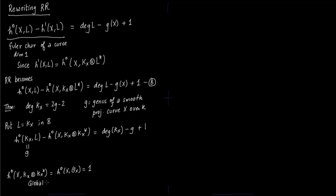Since the entire global section on O is just the constant. Degree of numerator is equal to degree of denominator. You do not have any non-constant functions. And the only thing possible here is the constant. And the dimension of this constant we take as 1. So this is 1 here. So we get degree of kx is equal to 2g-2.